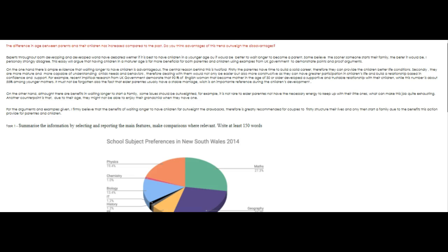Experts wrote — both the developing and developed world have debated — 'whether' needs an H here — whether it is best — take out the 'if' here — to have children at a younger age, or — with an R — if it would be better to wait longer to become a parent.